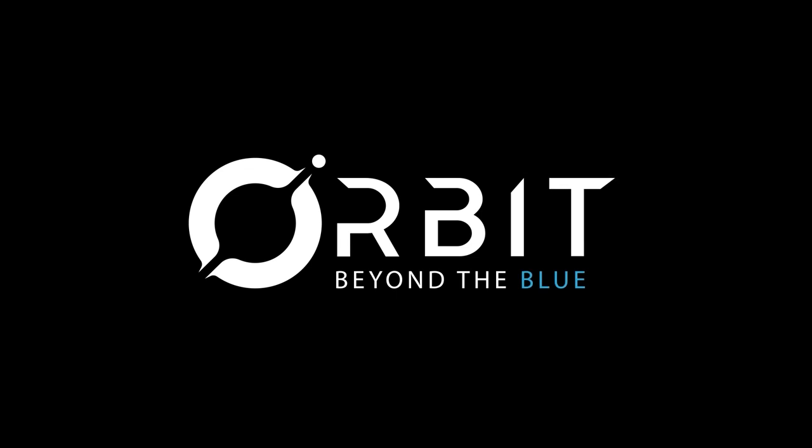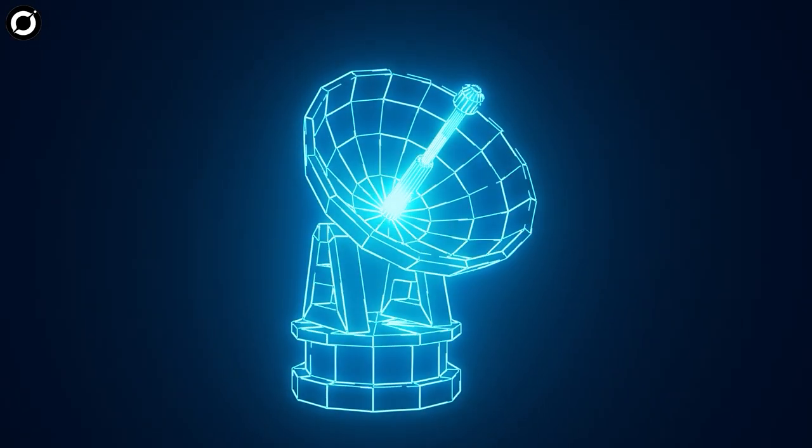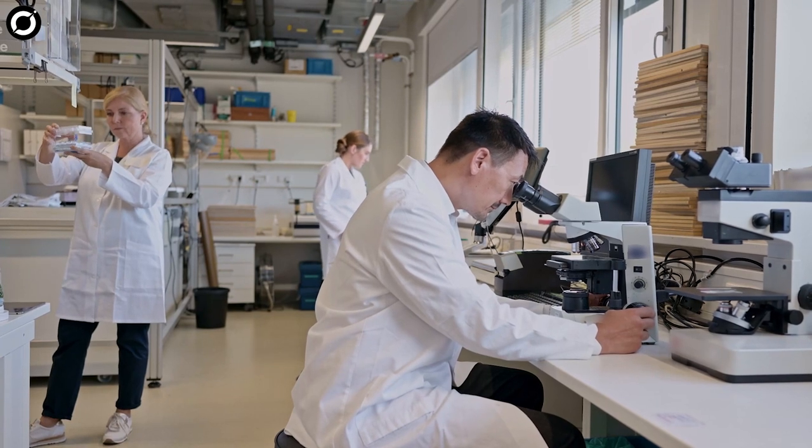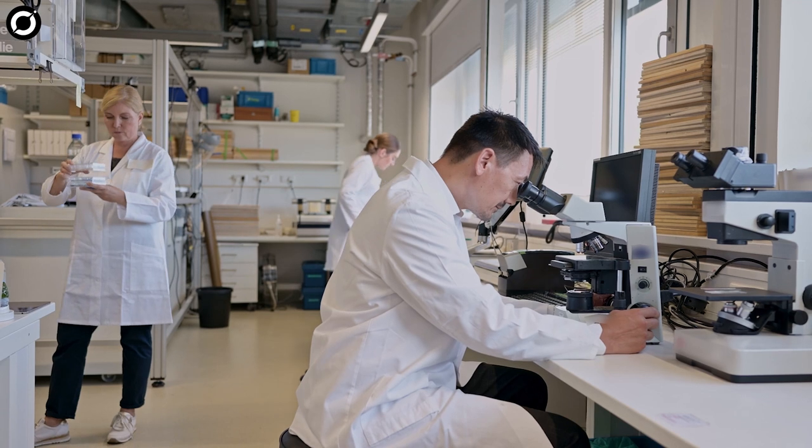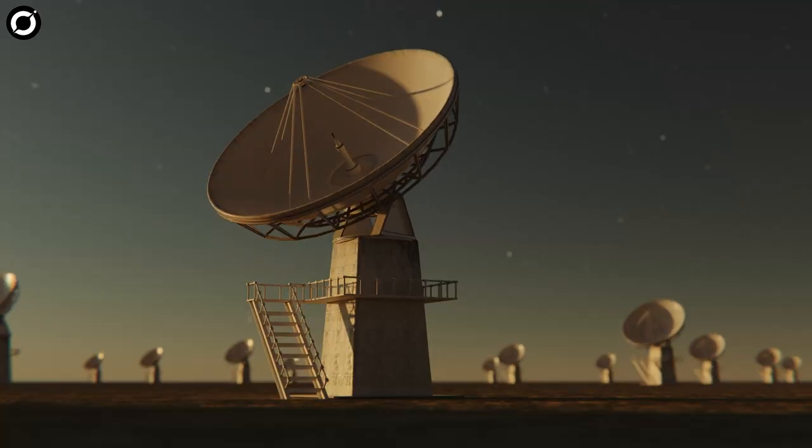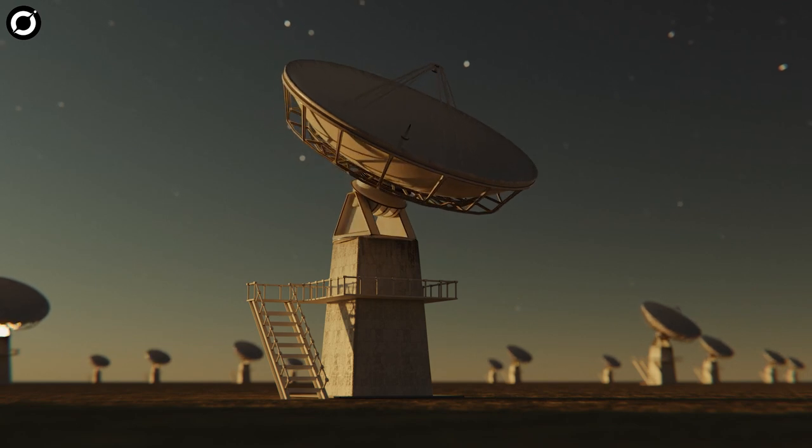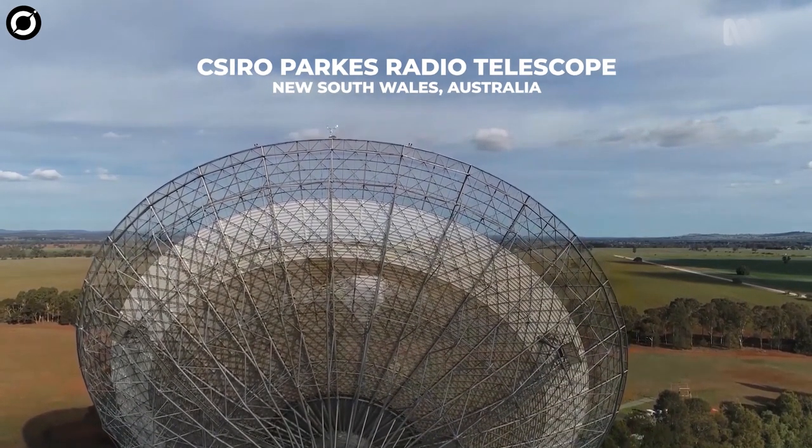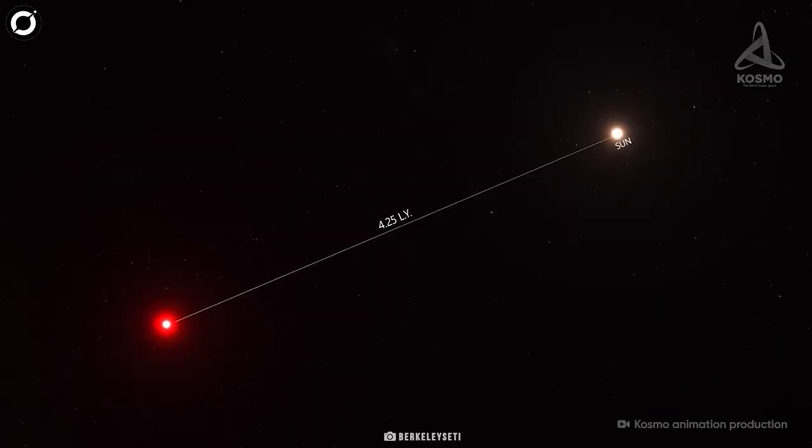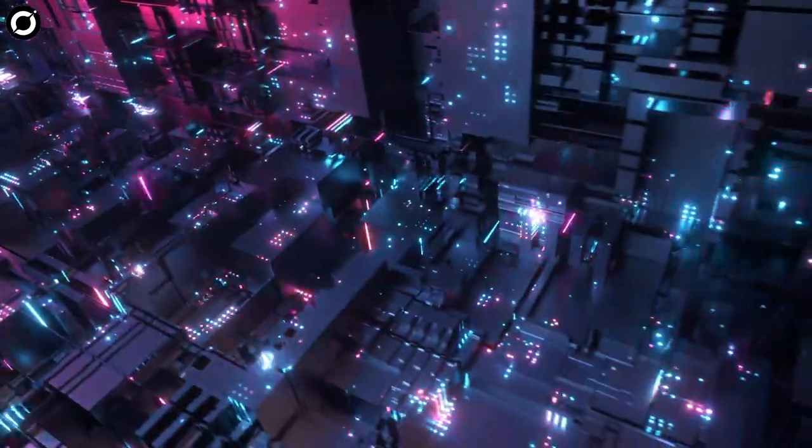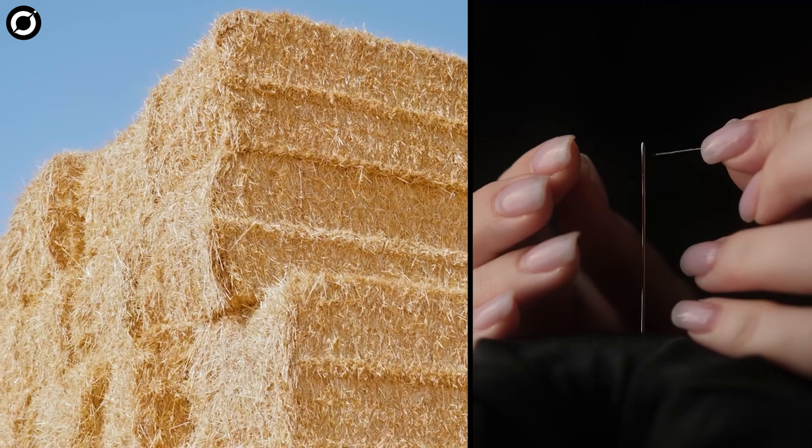Discovered by the Breakthrough Listen project, the signal has been dubbed Breakthrough Listen Candidate One, or BLC-1. The project, established to seek extraterrestrial communication by intelligent organisms, has garnered roughly 100 million dollars in financing and dedicated thousands of hours of telescope observation time. The signal was detected by the CSIRO Parkes radio telescope in New South Wales, Australia, while observing Proxima Centauri. It almost went undetected among vast volumes of data, but astronomers discovered it like a needle in a haystack.